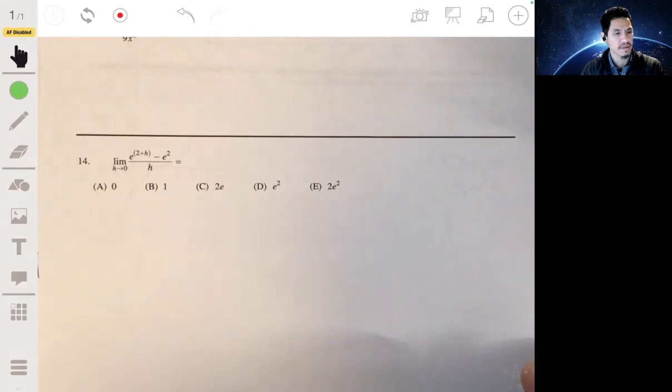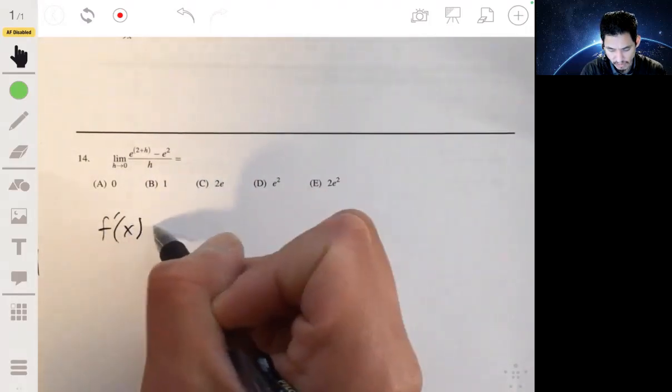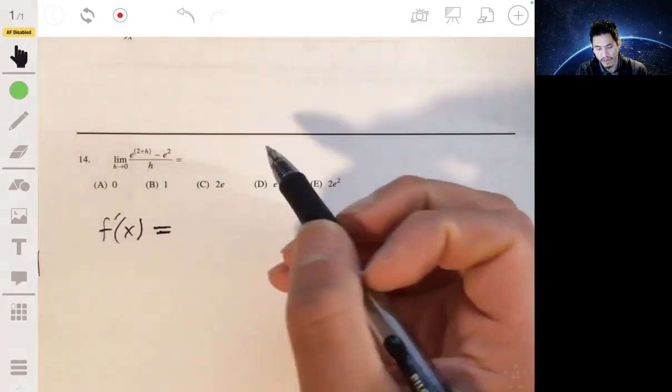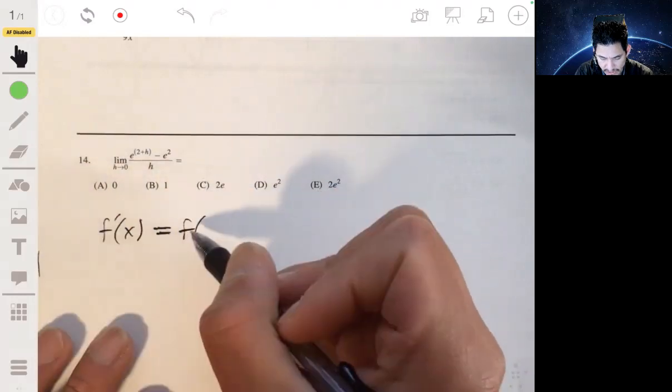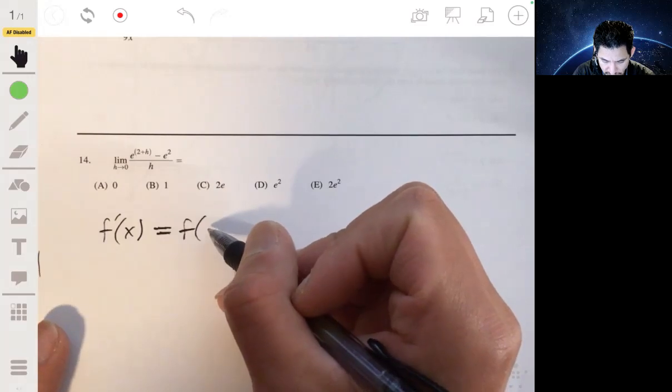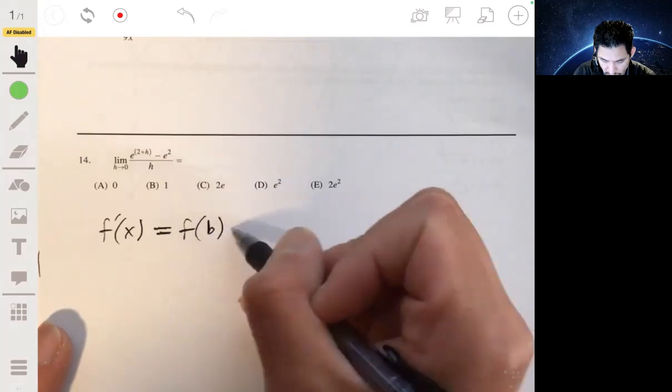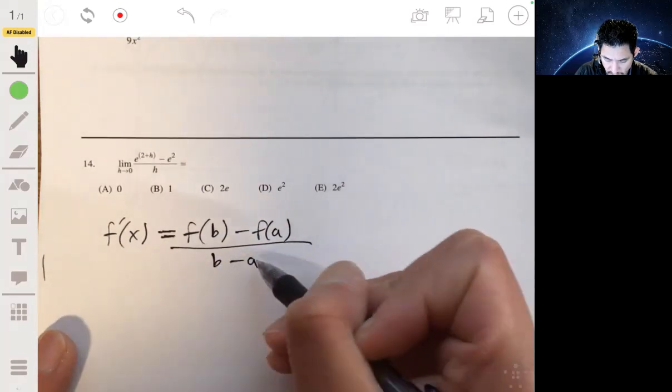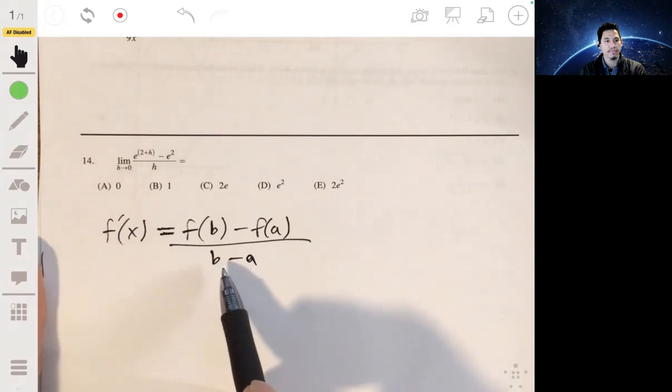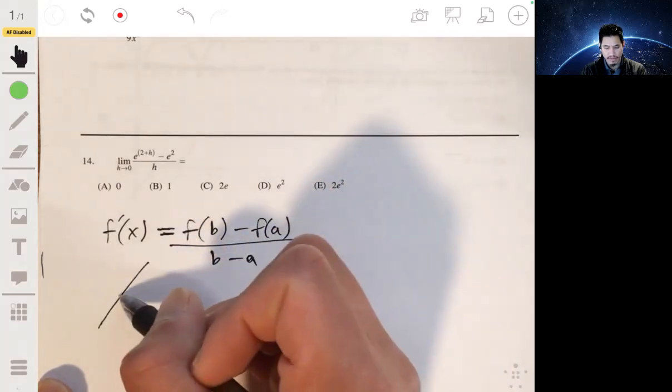And 14. So this is just basically the definition of the derivative. If you remember, the derivative is the limit. Oh, not the limit. Let me just write a kind of a setup. Remember the derivative is the slope, and it's basically the slope of a tangent line. As the difference between x values, the difference between the x values that you find the slope get very, very close. So they basically goes to zero. So like, let's say if it was like f(b) minus f(a) over b minus a.